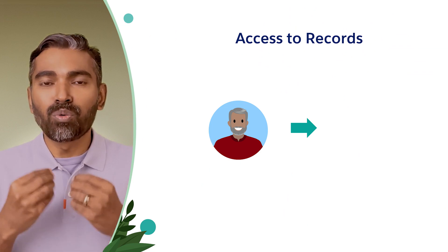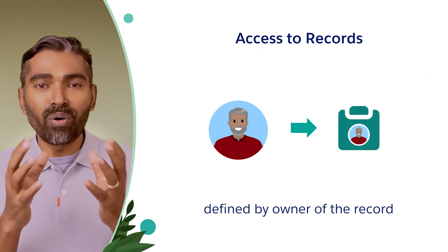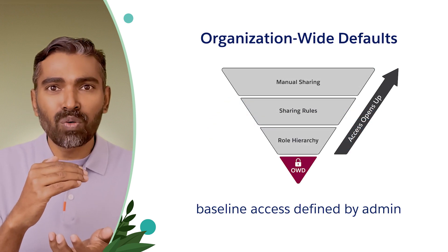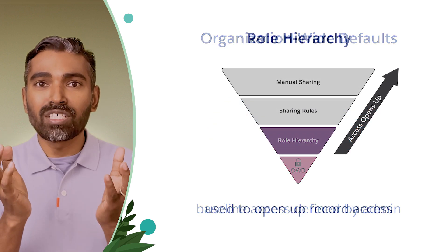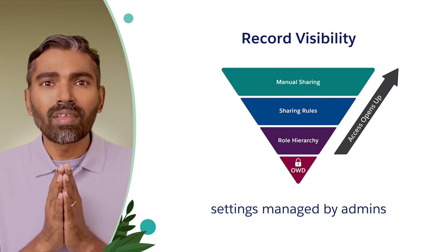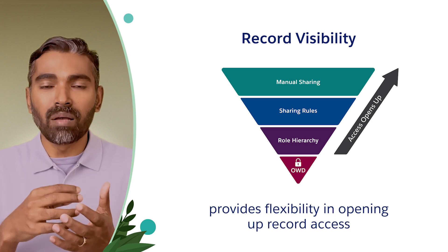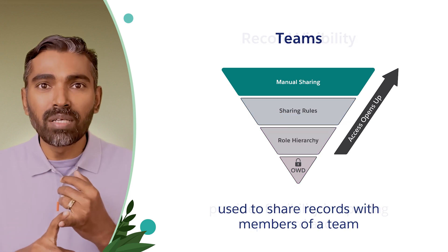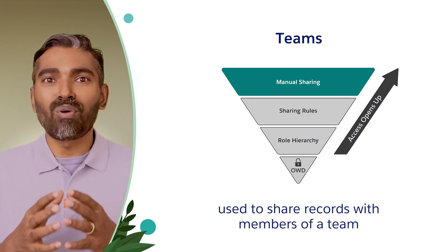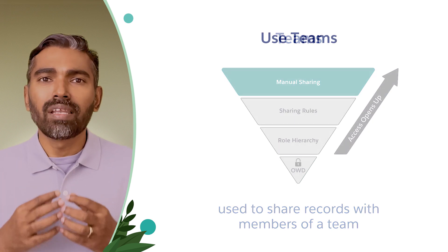How does Teams fit into record sharing? We know that access to a record is defined by the owner of the record, and then the admin sets the baseline access in the organization, while defaults open up access using role hierarchy and sharing rules. All of these are managed by admins, and this is where the flexibility to open up access comes — you can use Teams and allow owners of records and anyone above them in a role hierarchy to simply share records to members of a team.